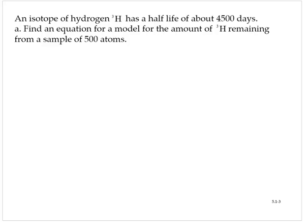An isotope of hydrogen, H3, has a half-life of about 4,500 days. Find an equation for a model for the amount of H3 remaining from a sample of 500 atoms.